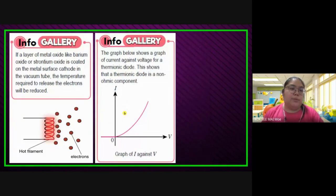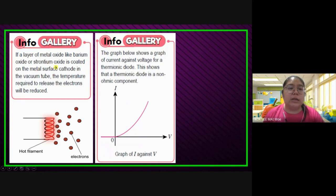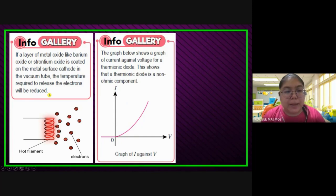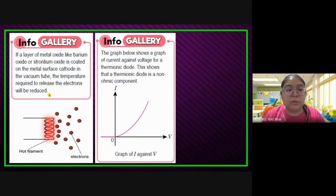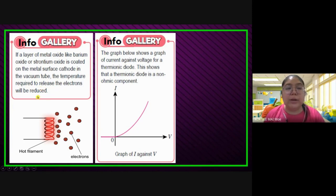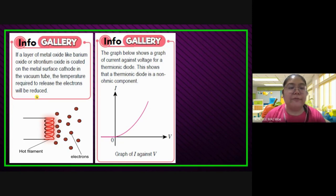One info from your textbook: if a layer of metal oxide — like barium oxide or strontium oxide — is coated on the metal surface as the cathode in the vacuum tube, the temperature required to release the electron will be reduced. So you don't need to use as much heat, because they are faster to heat up. The barium oxide and strontium oxide help the temperature rise faster. The graph below shows a current-against-voltage graph for the thermionic diode — this shows that thermionic diode is a non-ohmic component. It doesn't follow Ohm's law — the graph is a curve, not directly proportional.